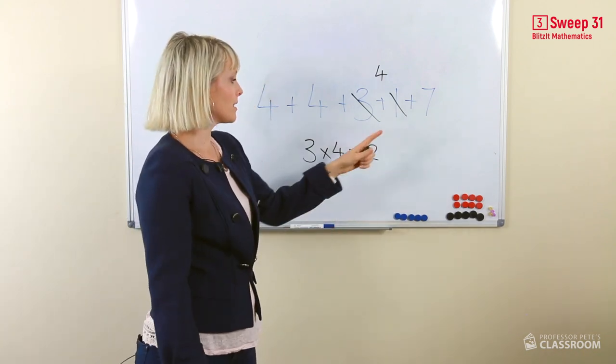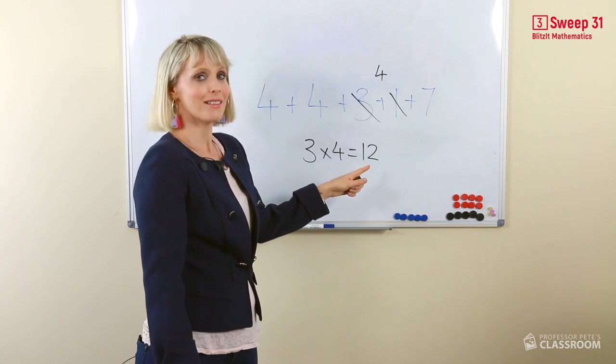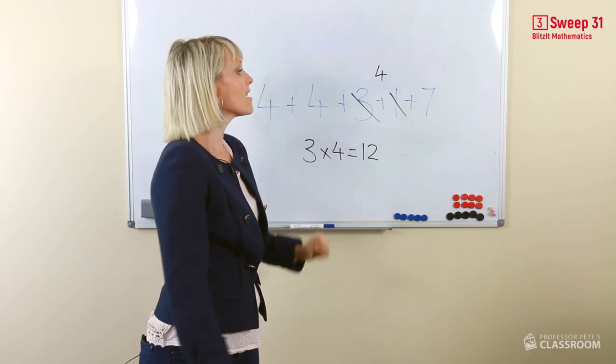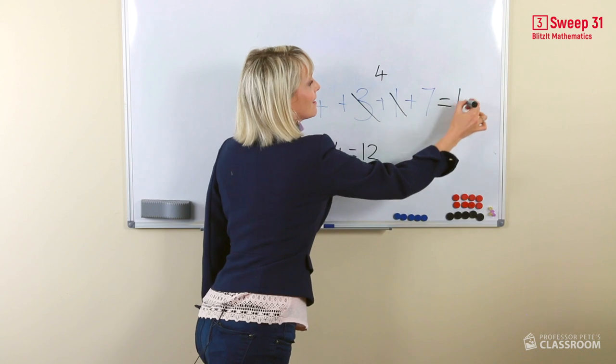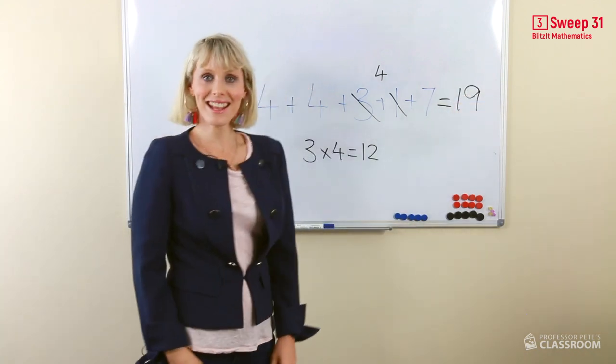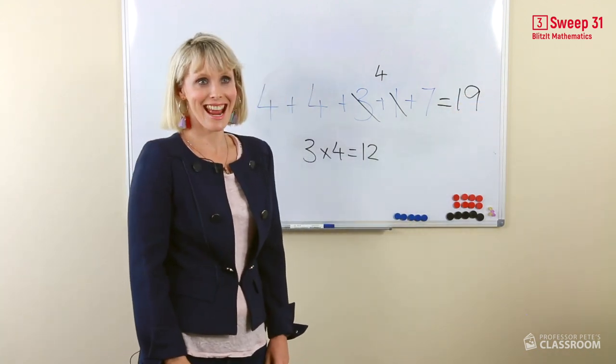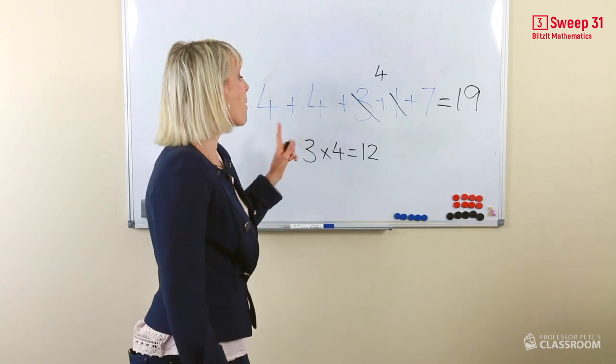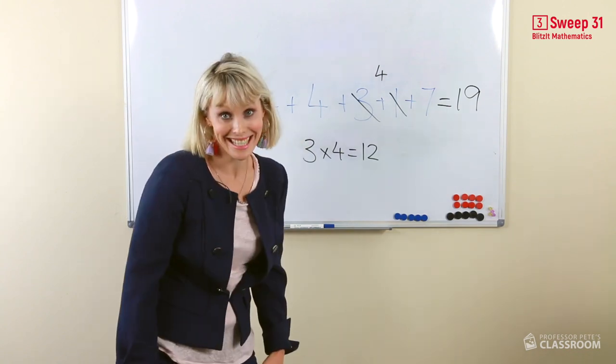Looking at our ones, seven and two, and the ten equals 19. Our answer is 19. And we used multiplication and addition in this one.